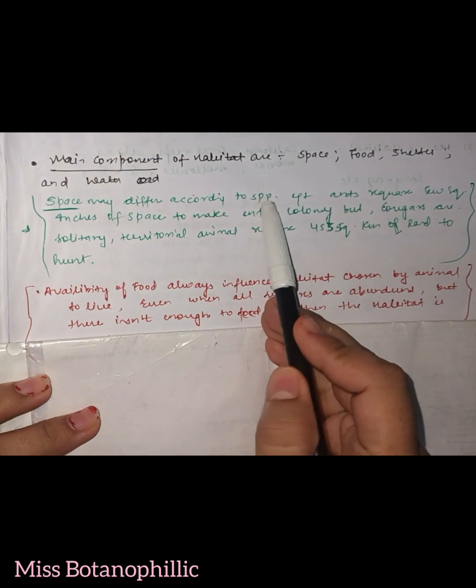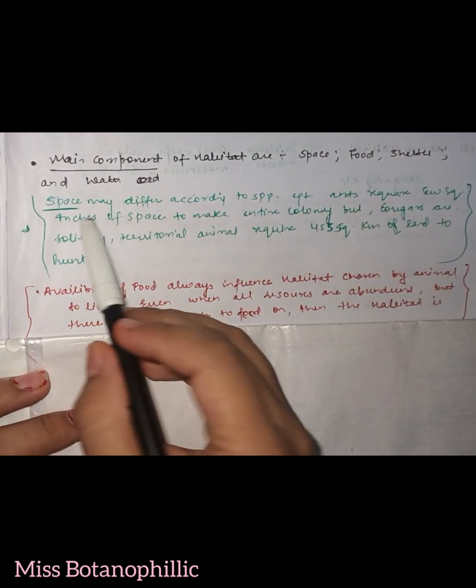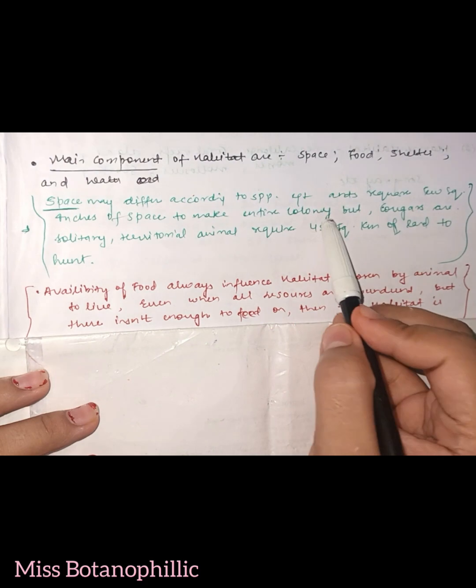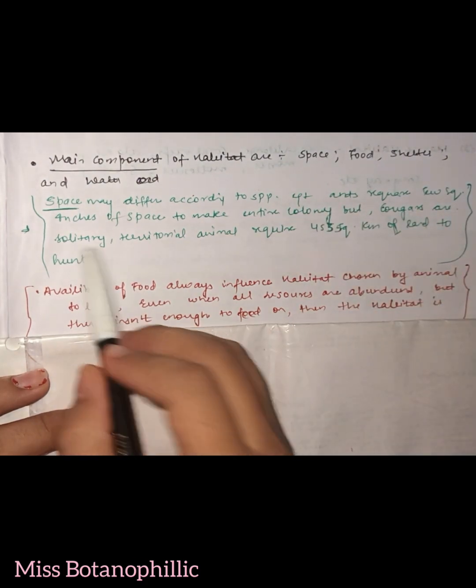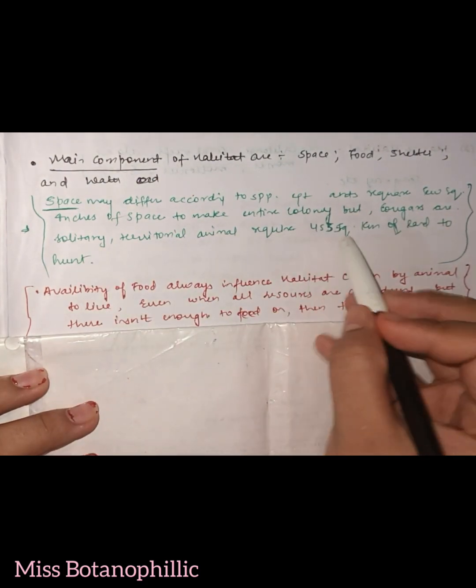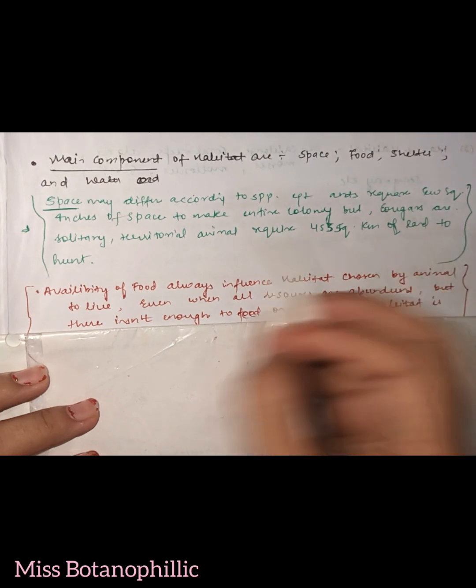Space may differ according to species. For example, ants require few square inches of space to make their entire colony,